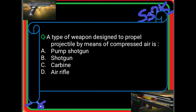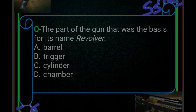A pump shotgun has a tube magazine and requires you to pump it to load a round into the chamber — it is also known as trombone. A shotgun is a weapon capable of propelling multiple pellets in a single shot; for example, a 12-gauge shotgun can fire multiple pellets — either bird shot or buckshot. A carbine is a rifle less than 22 inches in barrel length.